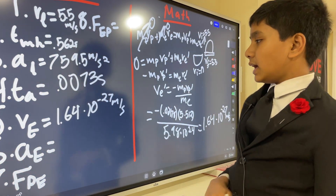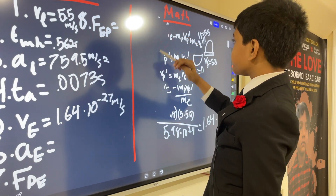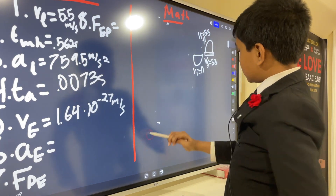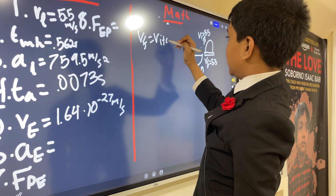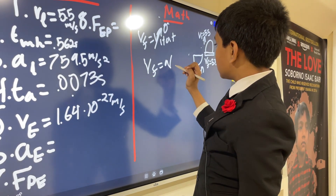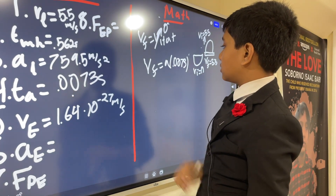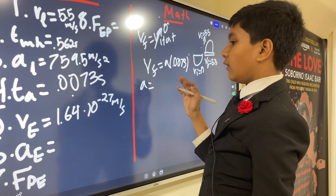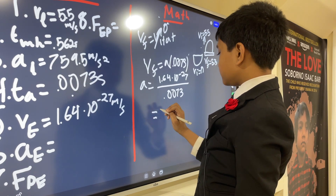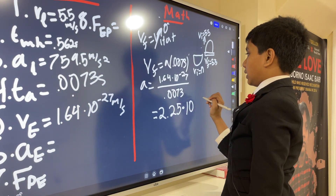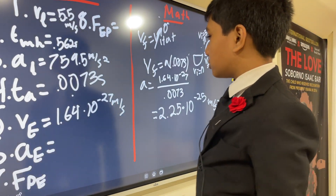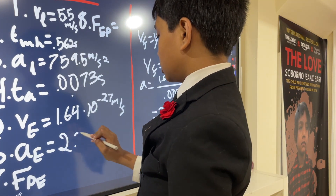The acceleration of Earth: using VF = VI + AT, since the Earth wasn't moving before, VF = A × T, where T is the same time it took the popper to pop off the ground. So A = 1.64 × 10⁻²⁷ / 0.0073 ≈ 2.25 × 10⁻²⁵ m/s², which is also basically negligible.